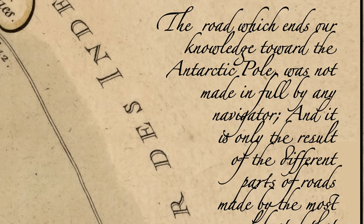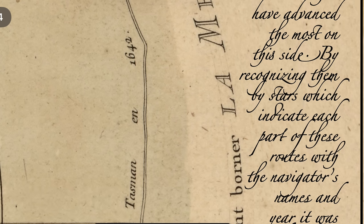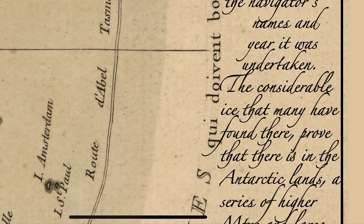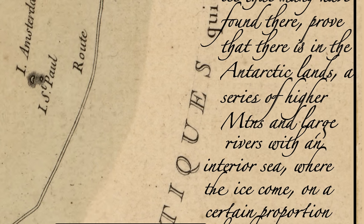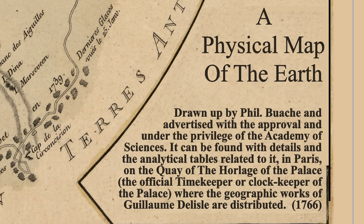The road which ends our knowledge towards the Antarctic pole was not made in full by any navigator, and it is only the result of the different parts of routes made by the most celebrated that have advanced the most of this side. We recognize them by marking them with stars which indicate each part of the route with the navigator's name and the year it was undertaken. The considerable ice that many have found there prove that there is in the Antarctic lands a series of high mountains and large rivers with an interior sea where the ice comes in a certain proportion with what we observe on the side of the Arctic pole. The physical map of the earth drawn up by Philippe Buache, advertised with the approval and under the privilege of the Academy of Sciences.